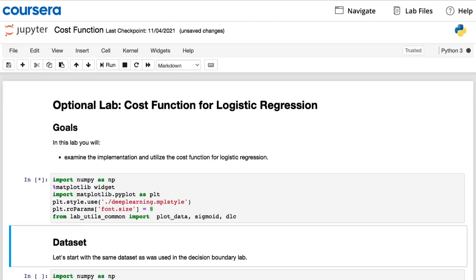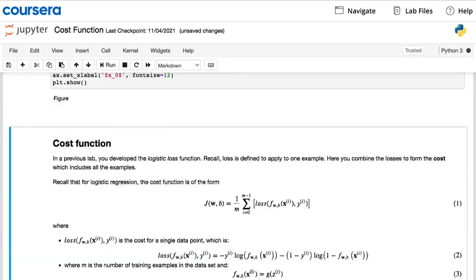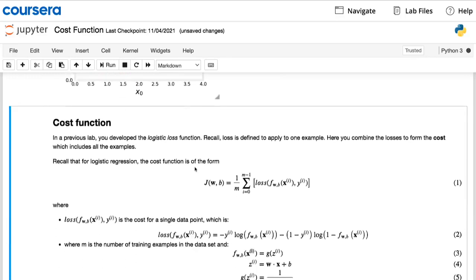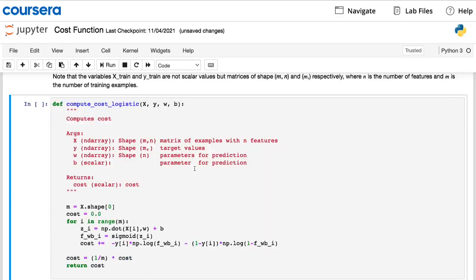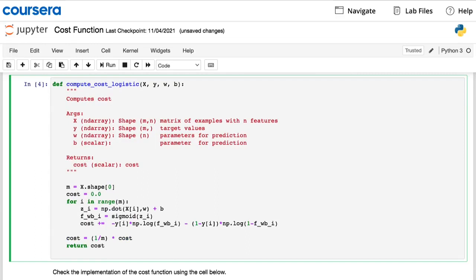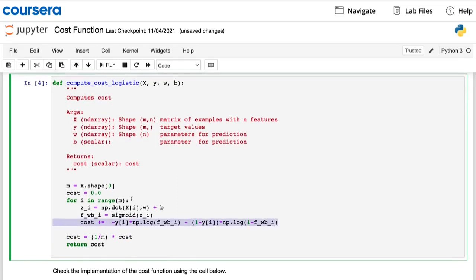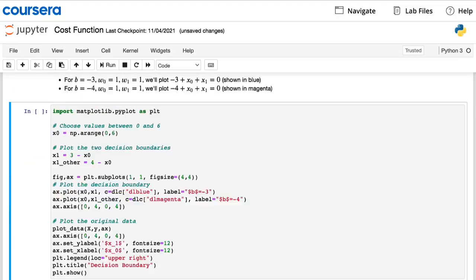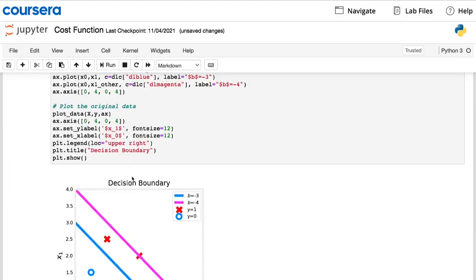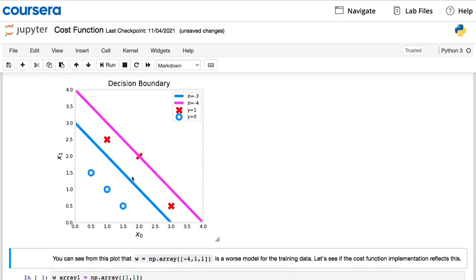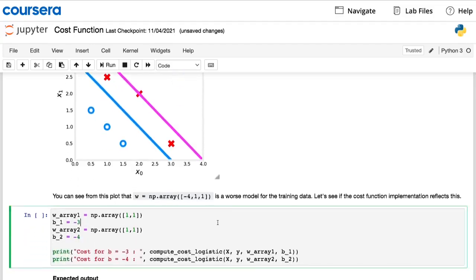The upcoming optional lab will show you how the logistic cost function is implemented in code. I recommend taking a look at it, because you implement this later in the practice lab at the end of the week. This upcoming optional lab also shows you how two different choices of the parameters will lead to different cost calculations. So you can see in the plot that the better-fitting blue decision boundary has a lower cost relative to the magenta decision boundary.